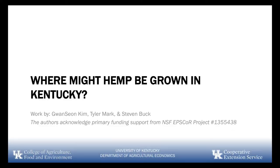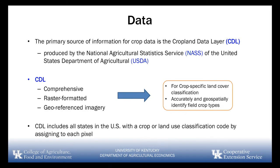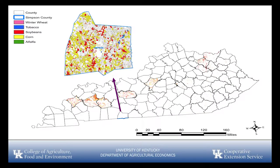The second project asks: where might hemp actually be grown? This is a really exciting project that one of my grad students has taken on under an NSF project. We're gathering a lot of data from across the state, using the Crop Data Layer along with NASS data and the Common Data Layer. We're able to get down to the field scale — at the field level I can tell what crop was being produced using satellite imagery.